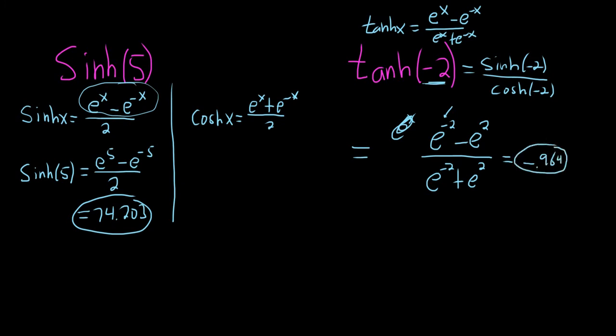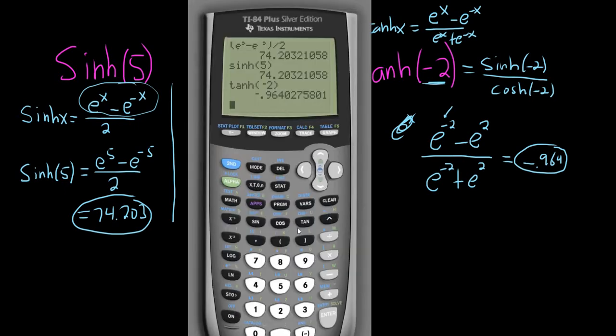We could check that our formula is correct. Let's go ahead and do it. It would be e to the negative 2, so parentheses, e to the negative 2, and arrow key minus e to the 2. Arrow key, parentheses, divided by parentheses.